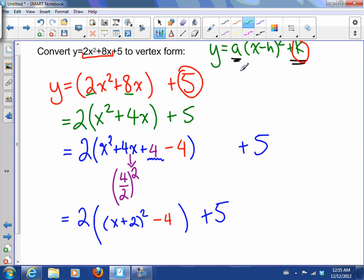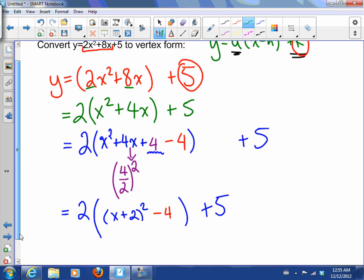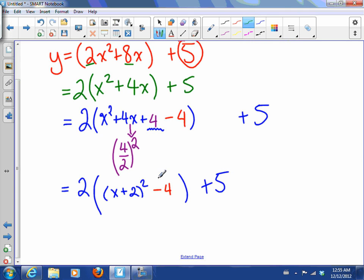So now we're really close to looking like that vertex form, but the last thing we have to do is kick this 4 out of this bracket. This 2 applies to this, so that's actually 2(x + 2)² and then the 2 applies to the minus 4, so -8 + 5.